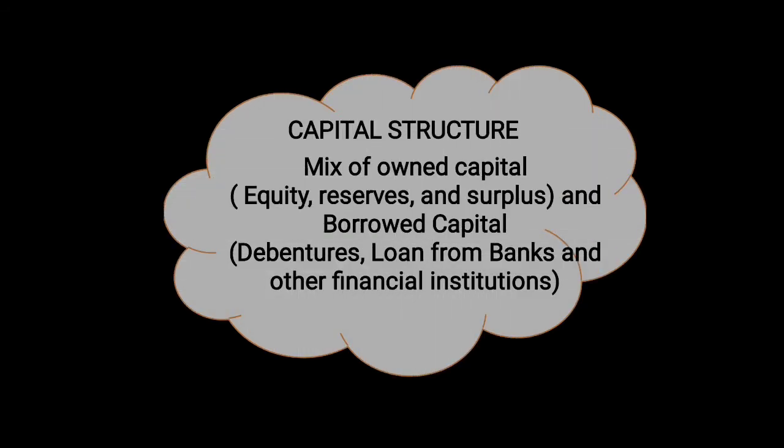What do we say about capital structure? Capital structure is the mix of owned capital and borrowed capital. Equity shares, reserves and surplus — these are owned capital. Debentures, loans from banks, loans from other financial institutions — these are borrowed capital. So capital structure is the mix of owned capital and borrowed capital. Owned capital is equity, and borrowed capital is debt.